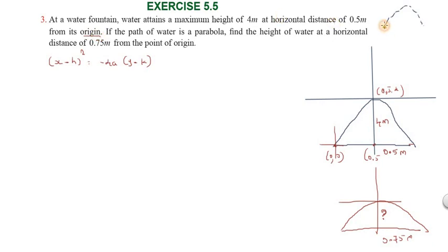For the water fountain problem, we need to identify the parabola type. Since water goes up and comes down, the parabola opens downward. It is not open upward, left, or right — it opens downward.